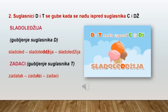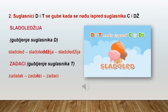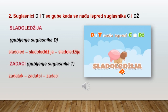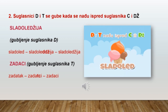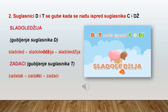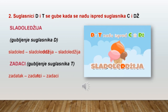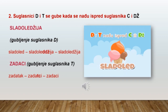Suglasnici D i T se gube kada se nađu ispred suglasnika C i Đ, kao u riječi sladoleđija. Tu imamo gubljenje suglasnika D, pa dobijamo riječ sladoleđija. Imenica zadatak u nominativu množine glasi zadaci, dakle ne zadatci, jer je tu došlo do gubljenja suglasnika T.